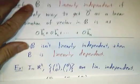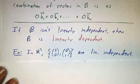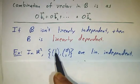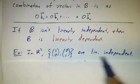So for example, if we're in R², then the vectors (1,0) and (0,1) are linearly independent.